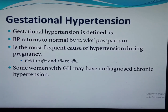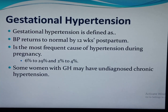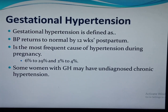Gestational hypertension is defined as hypertension without proteinuria and without signs or symptoms of end-organ dysfunction, after 20 weeks of gestation in previously normotensive women, with blood pressure returning to normal by 12 weeks postpartum. It is said to be the most frequent cause of hypertension during pregnancy, affecting 6 to 29 percent of nulliparous women and 2 to 4 percent of multiparous women. Some women with gestational hypertension may have undiagnosed chronic hypertension.